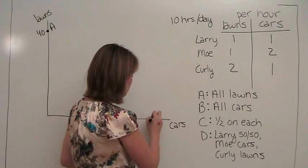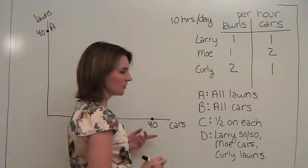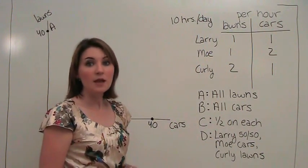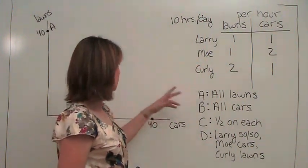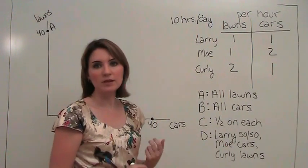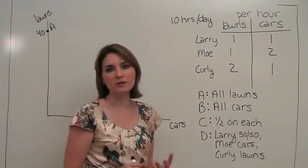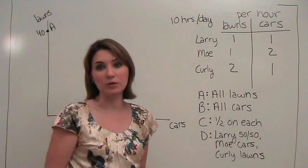The point at which we're washing forty cars and not doing anything else is down here. Now the interesting part is what happens in between these two points, because that represents the trade-off between lawns and cars that we have in our very simple economy.